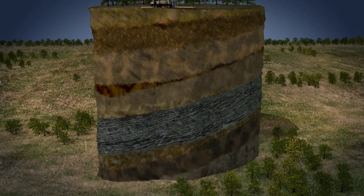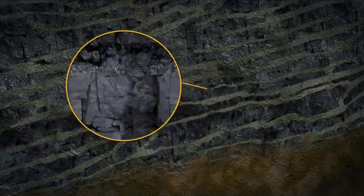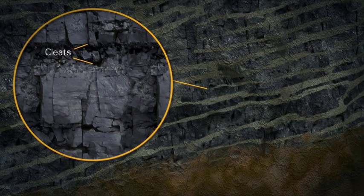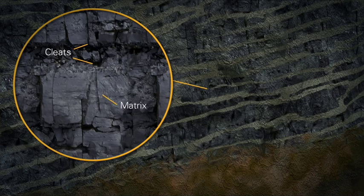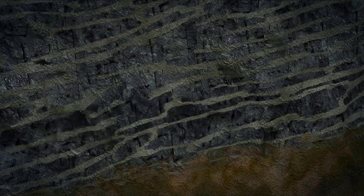Coal seam gas is formed by the same natural processes that create the coal seams which hold it. In coal seams the gas is found in fractures in the coal, cleats and the structure of the coal itself, the matrix, and is trapped there by water and ground pressure.